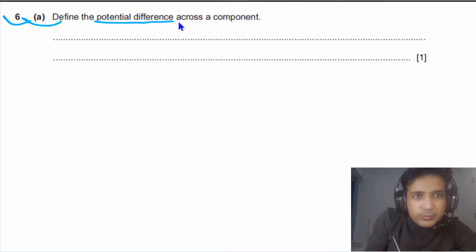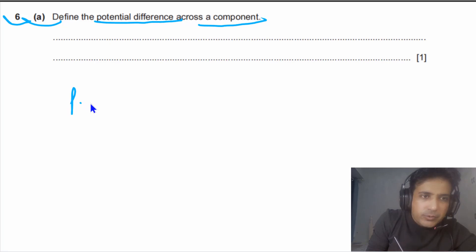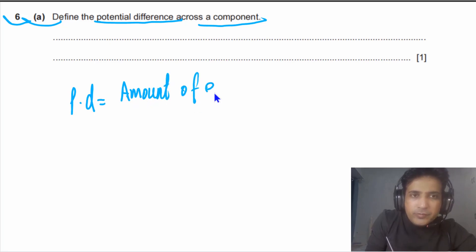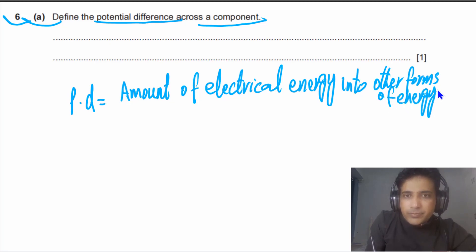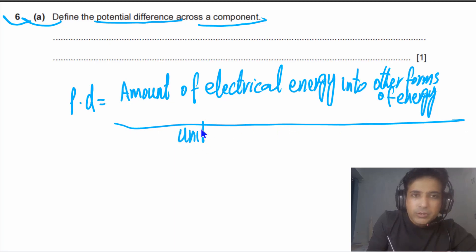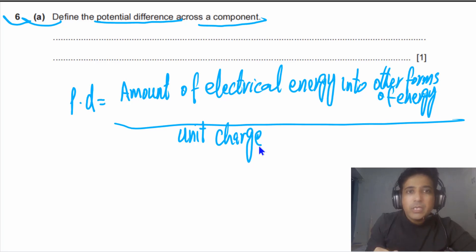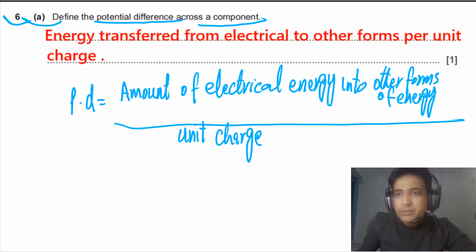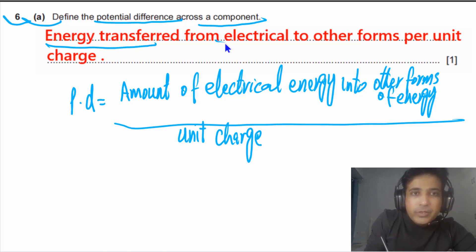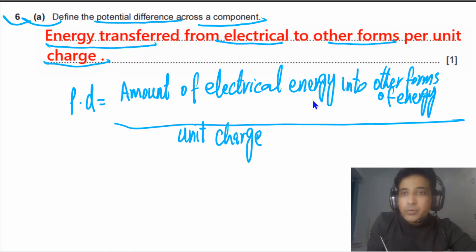For question 6, part A, we need to define potential difference across a component. Potential difference across a component is equal to the amount of electrical energy converted into other forms of energy per unit charge. In your answer, you can write: energy transferred from electrical to other forms per unit charge. Writing this will earn you one mark.